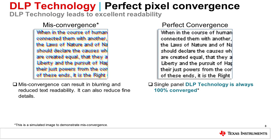For some projection technologies, misconvergence may occur due to projector handling and temperature-induced mechanical shifts, caused by either the environment or the projector itself as it thermally cycles through cooling and heating with operation. DLP technology provides a projected image that is always 100% converged, regardless of the environment. Which projector technology would you rather have in your classroom or conference room?